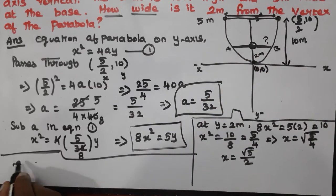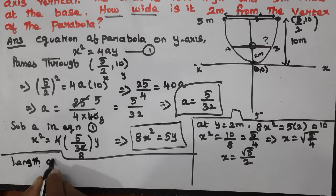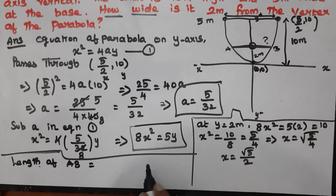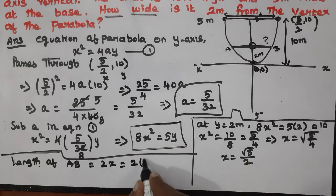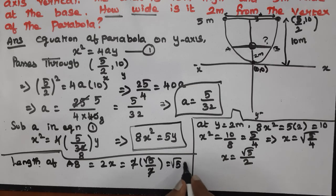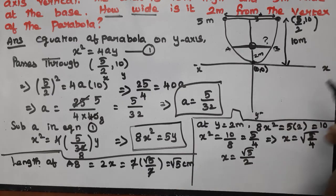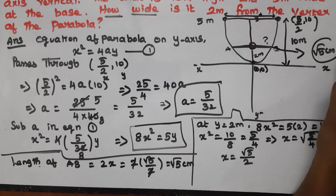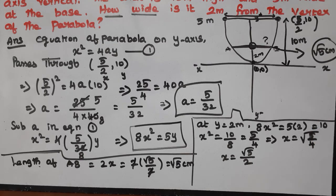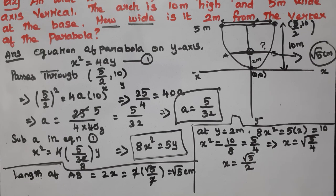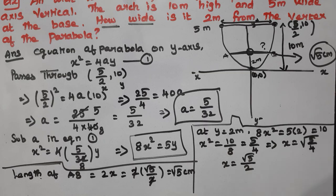We find the length — the length of the latus rectum is the length of AB. So this is the answer for the given question. Okay dear students, if you like, share and subscribe. Thank you.